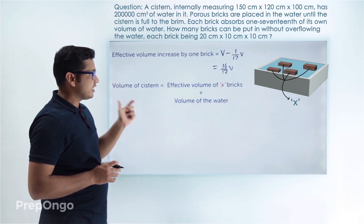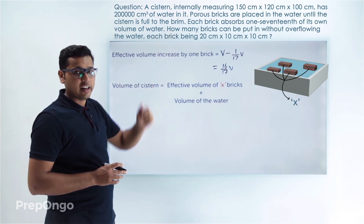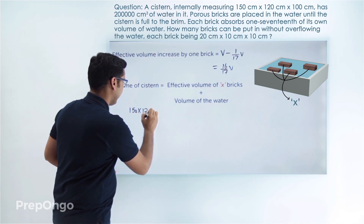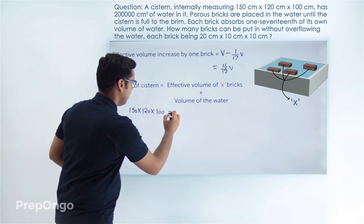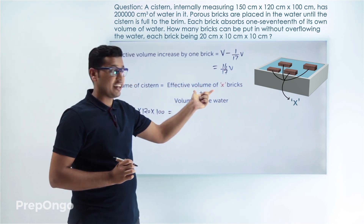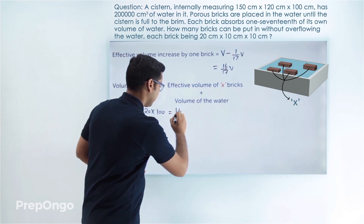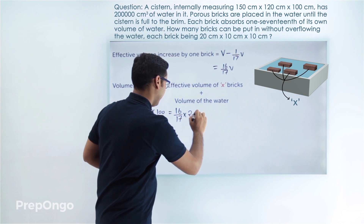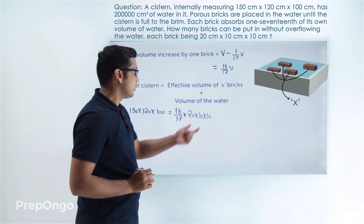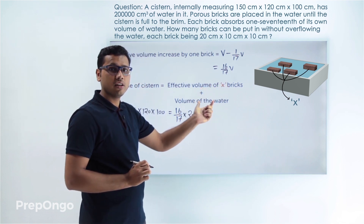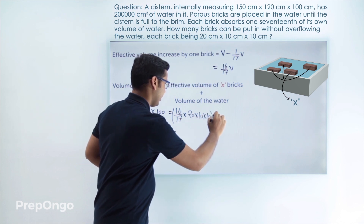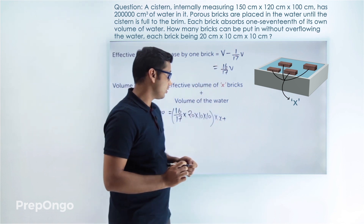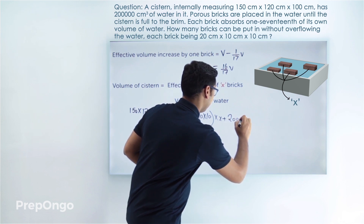We can easily find out the volume of the cistern by multiplying these values: 150 × 120 × 100. This will be equal to the effective volume of x bricks, which is 16/17 into the volume of brick (20 × 10 × 10), multiplied by x, plus the volume of water which was originally present in the cistern.